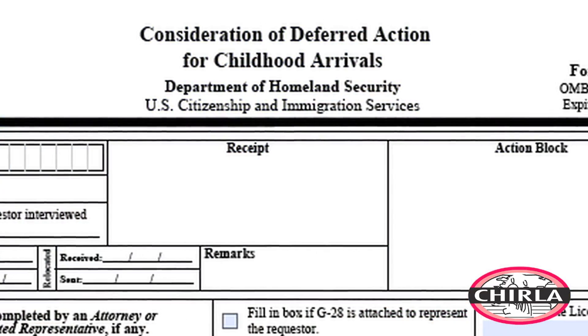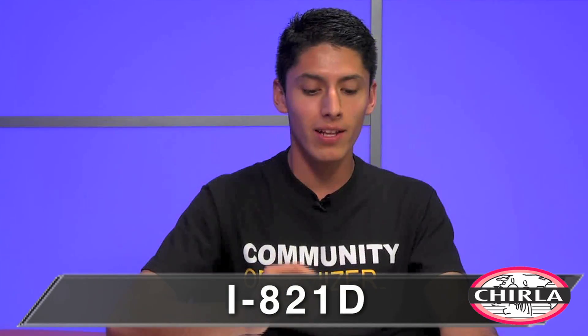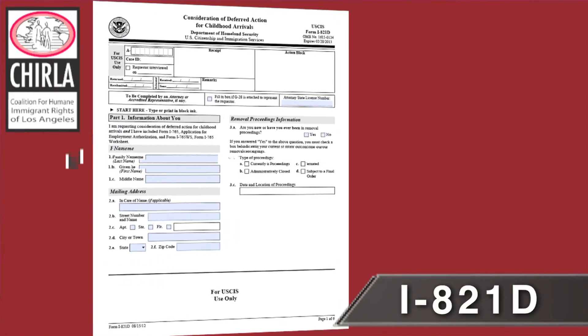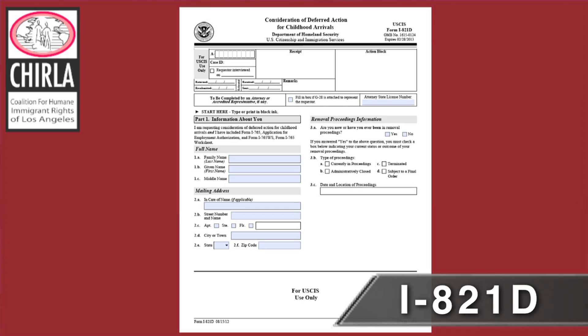Thank you, Justino. I'm glad to be here. Today we're going to be going over the different applications on deferred action. The first one is form I-821D, the second application is I-765, and the last application is I-765WS. For this video, we're going to be focusing on the first application, which is I-821D.